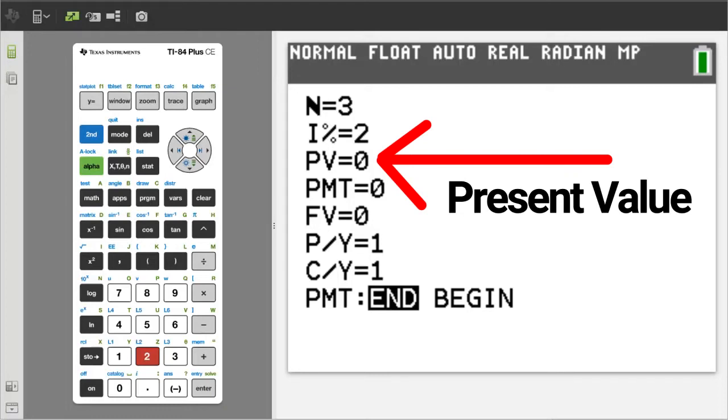We are taking 5,000 out of our pocket and putting it in the bank. So enter a negative 5,000 here. Make sure to use the negative sign here and not the minus sign. If you use the minus sign, you will get an error message when we press the solve button.